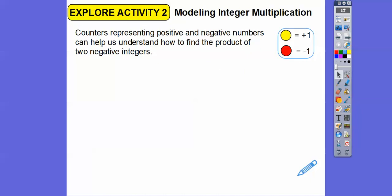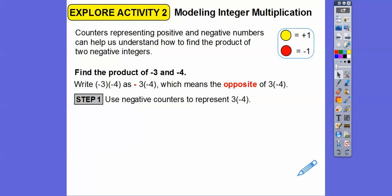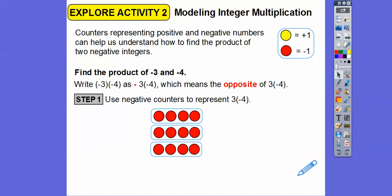Counters representing positive and negative numbers can also help us understand how to find products of two negative integers. Let's find the product of negative three and negative four. We write negative three times negative four as the opposite of three times negative four. So let's use counters to represent three times negative four, which is the same as three groups of negative four. Notice those are negative counters — here is three groups of negative four counters: one group, two groups, three groups.